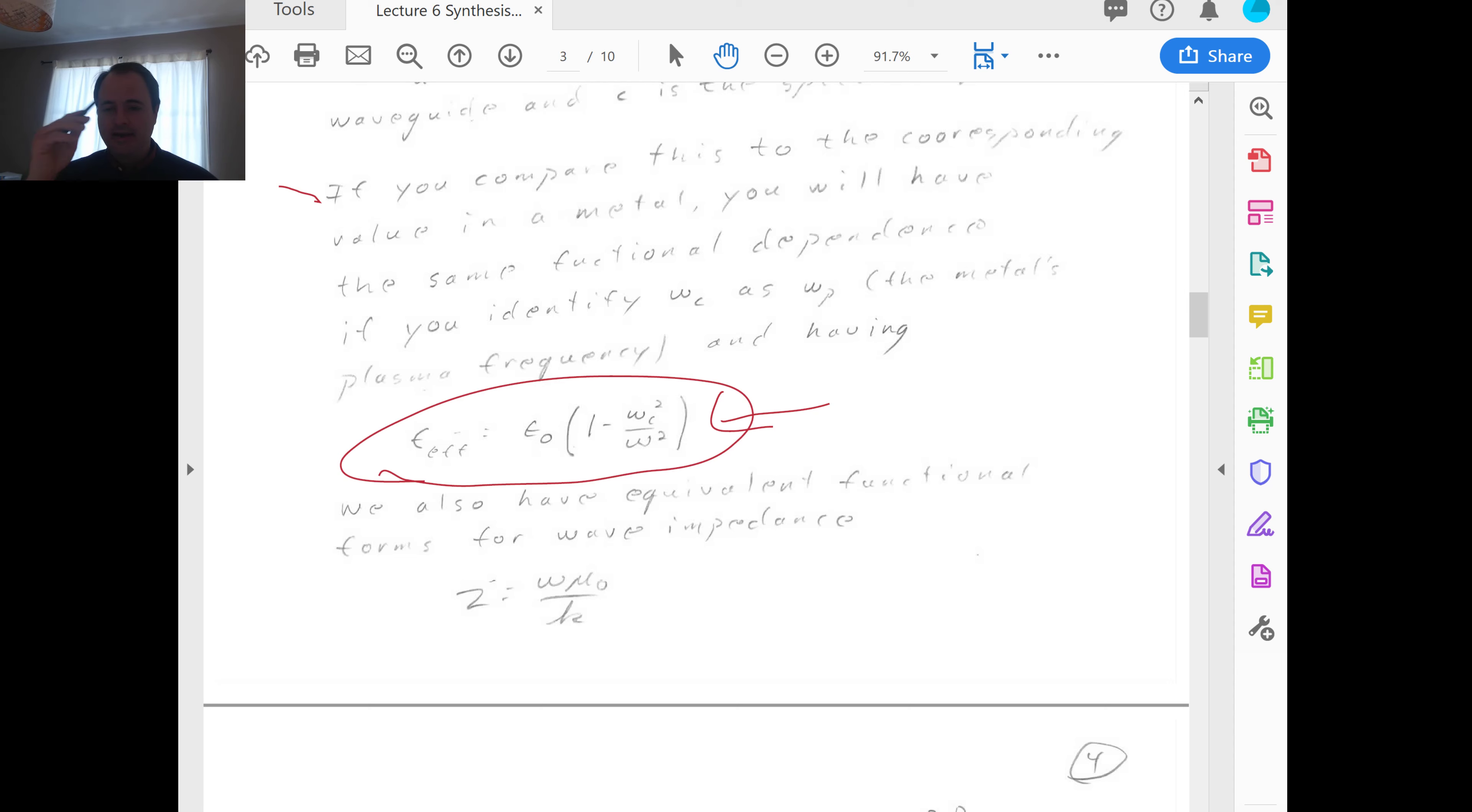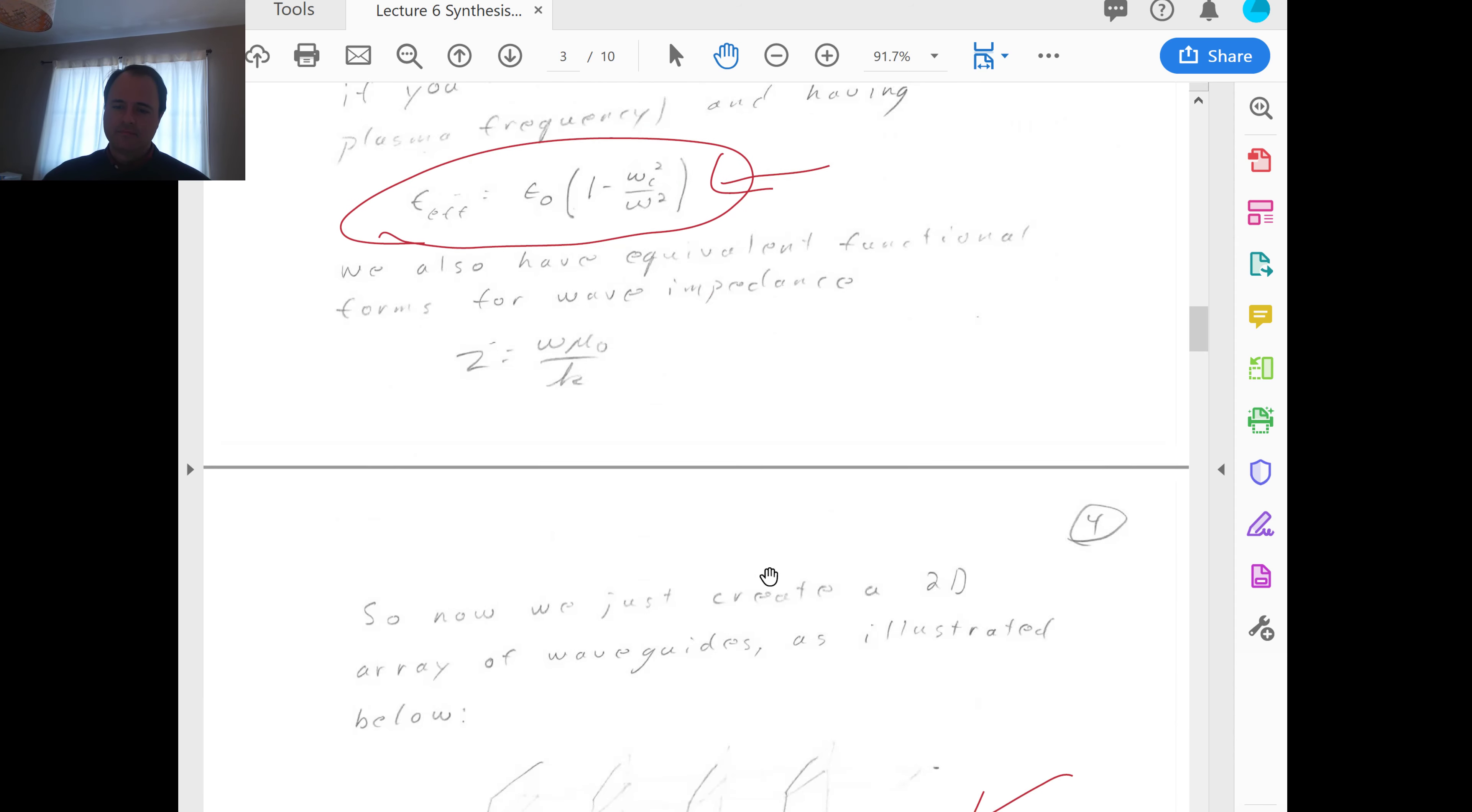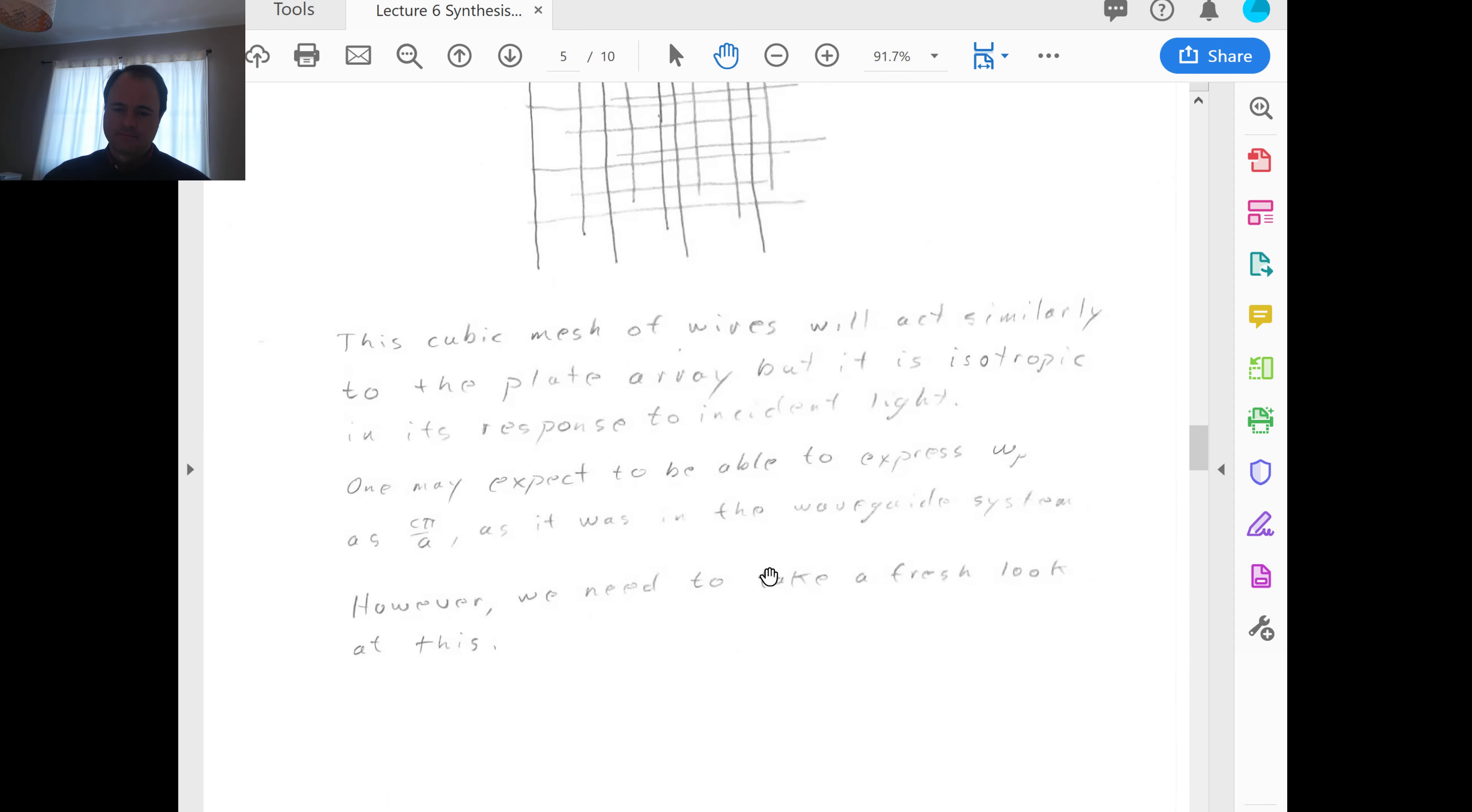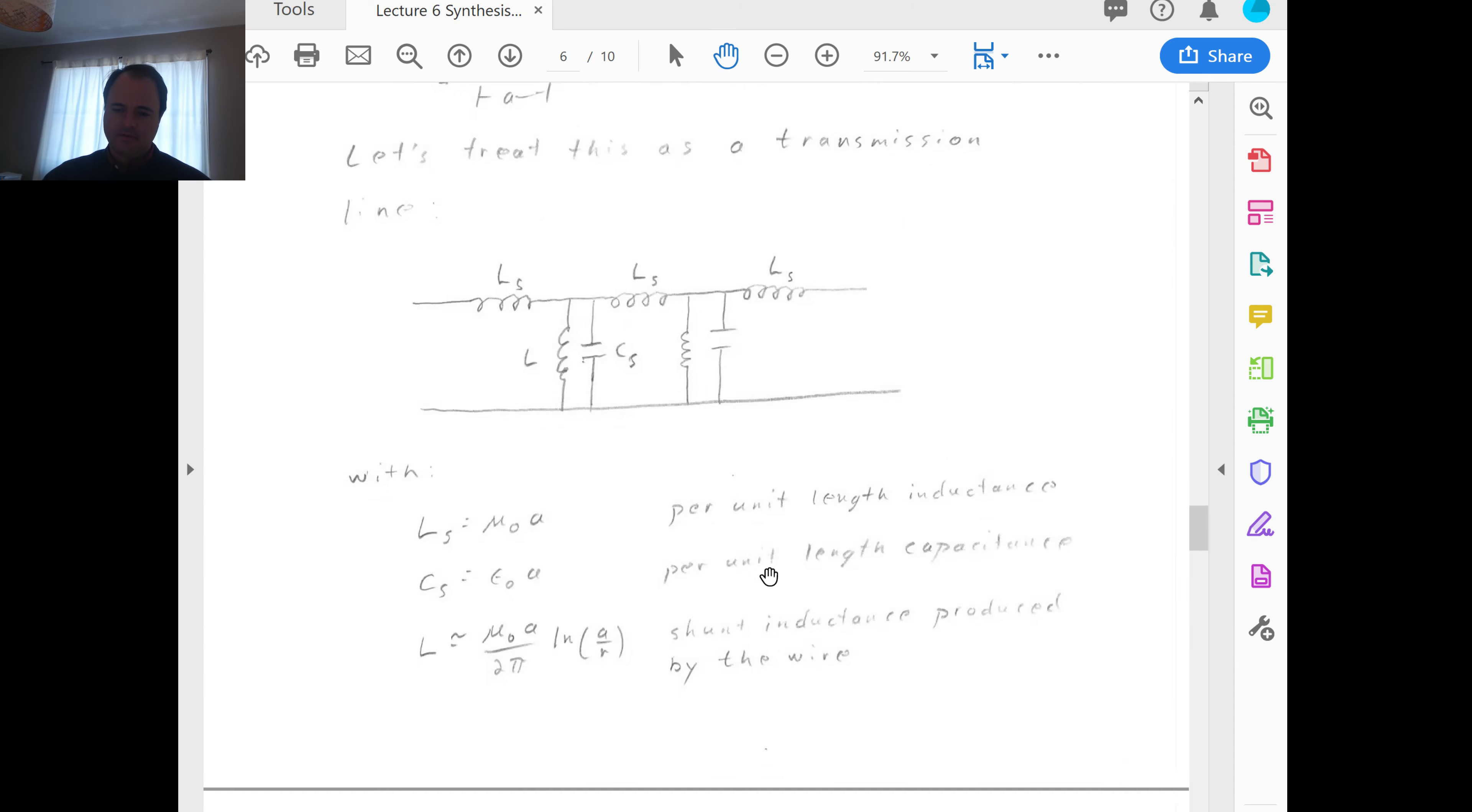So, that's interesting. Pendry got this, threw it out there. People use it all the time now for the wire mesh grid. And so we find that it's negative here in front. And so then you can express epsilon just like this again. And so then you can have a negative epsilon if omega C is greater than omega. So, for very small omegas, you will have a negative epsilon. And so that's what we're shooting for.